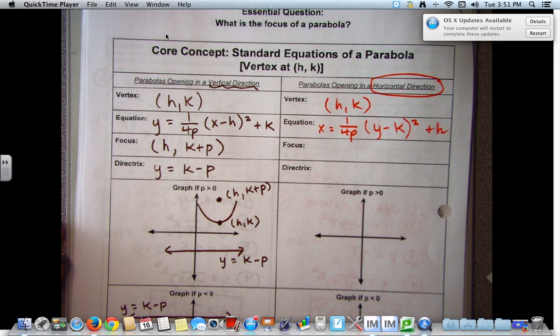If our graph opens to the right, then p is greater than 0. And it would look something like this. This vertex is at h plus p, k. Our focus falls within the opening of the parabola. This is h plus p, k. And the directrix is equal distance away as the focus is from the vertex. This is x equals h minus p.